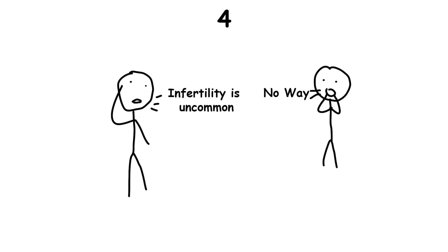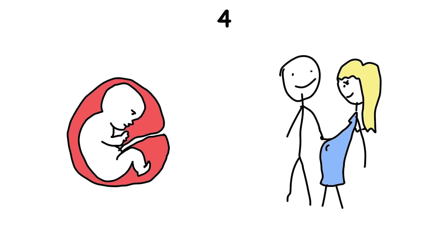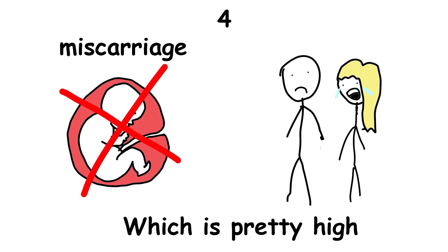Infertility is more common than people normally think. For example, 10 to 20% of pregnancies end up in a miscarriage, which is pretty high.